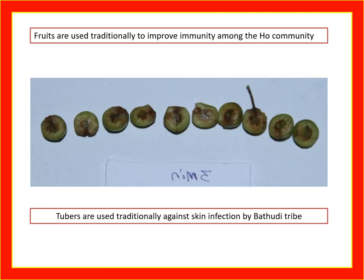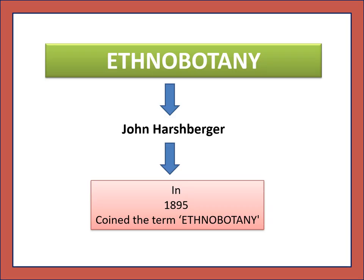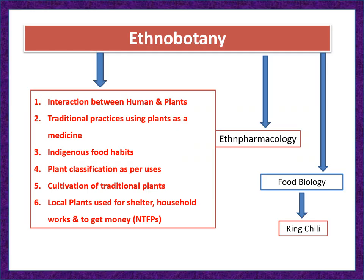Now we will discuss about the phytochemistry of a plant species or medicinal plant. Fruits are used traditionally to improve immunity among the whole community, and tubers are used traditionally against skin infection by Bathori tribes — this is a fruit of Smilax jalanika. How can we believe that both uses are correct? We have to do some experimental work for validation. The fruit-food relationship between human and plant is called ethnobotany.